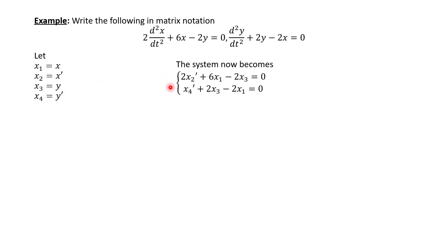Now rewrite the system in terms of these new variables. In the first equation, y becomes x sub 3, so we have minus 2 times x sub 3; x becomes x sub 1, so plus 6 x sub 1; and the second derivative of x becomes x sub 2 prime. In the second equation, x sub 4 prime is the derivative of y prime, which is y double prime; plus 2 times x sub 3 (since x sub 3 is y); minus 2 times x sub 1 (since x sub 1 is x).